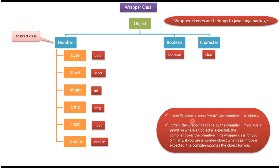These wrapper classes wrap the primitive in an object. Often the wrapping is done by the compiler. If you use a primitive where an object is expected, the compiler boxes the primitive in its wrapper class for you. Similarly, if you use a number object when a primitive is expected, the compiler unboxes the object for you.